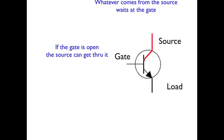Now here's some simple logic as we think about this. Whatever comes from the source waits at the gate. So if we have battery voltage, it waits at the gate. It can't make it any farther than that. If the gate is open, the source can then get through it, and make it all the way down to the load. And if the load is good, the source will then make it work. And the motor can run.